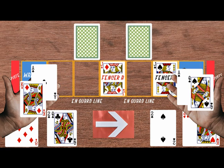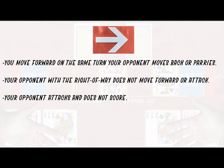The right of way is a bonus conferred upon one fencer that allows them to break ties in their favor. You gain the right of way when one or more of the following conditions are met.